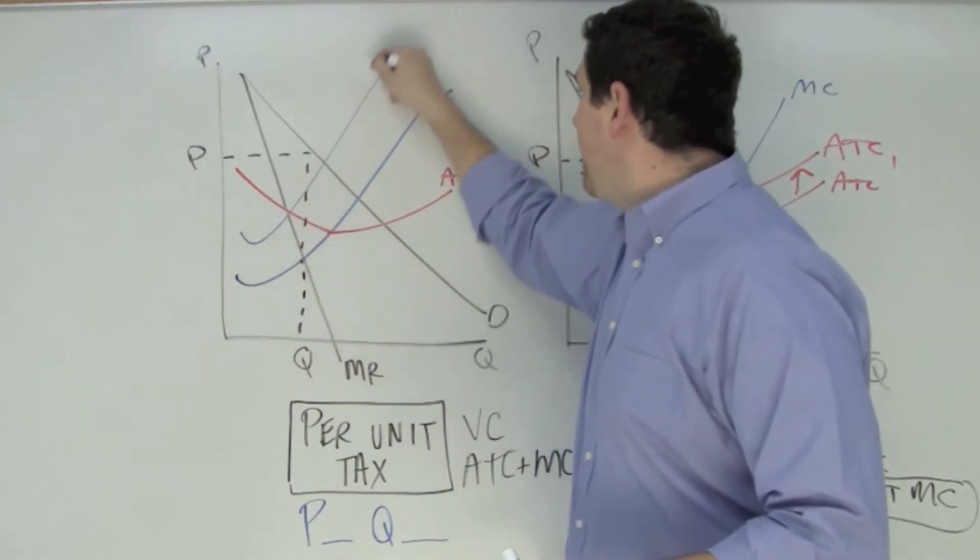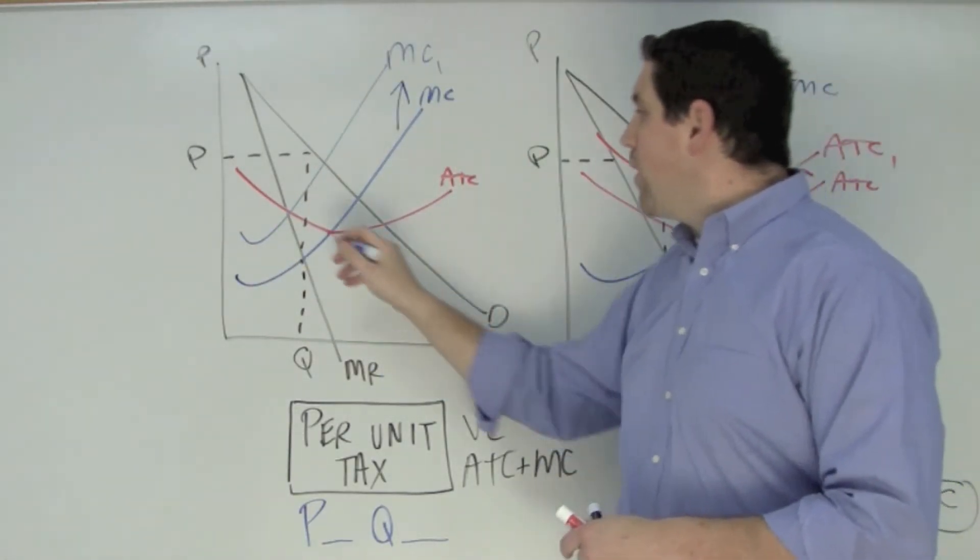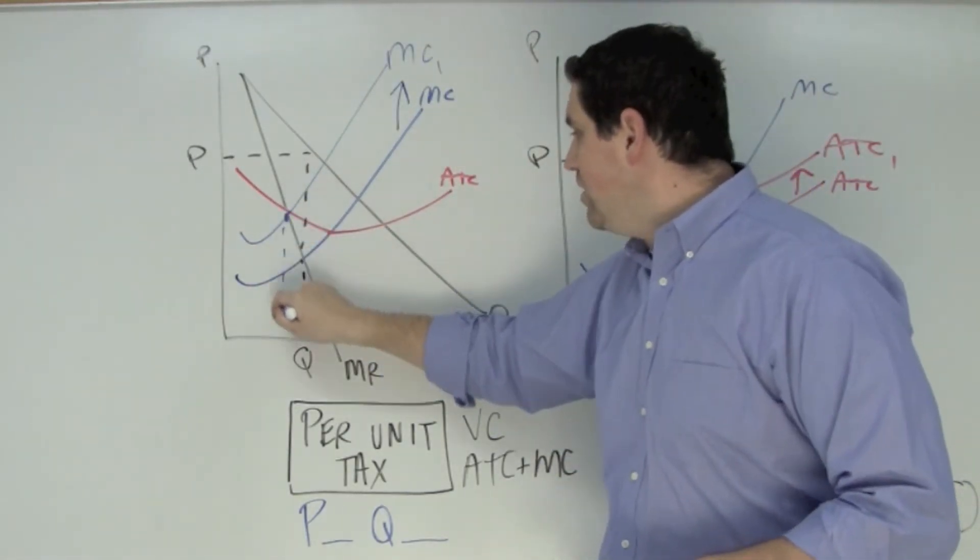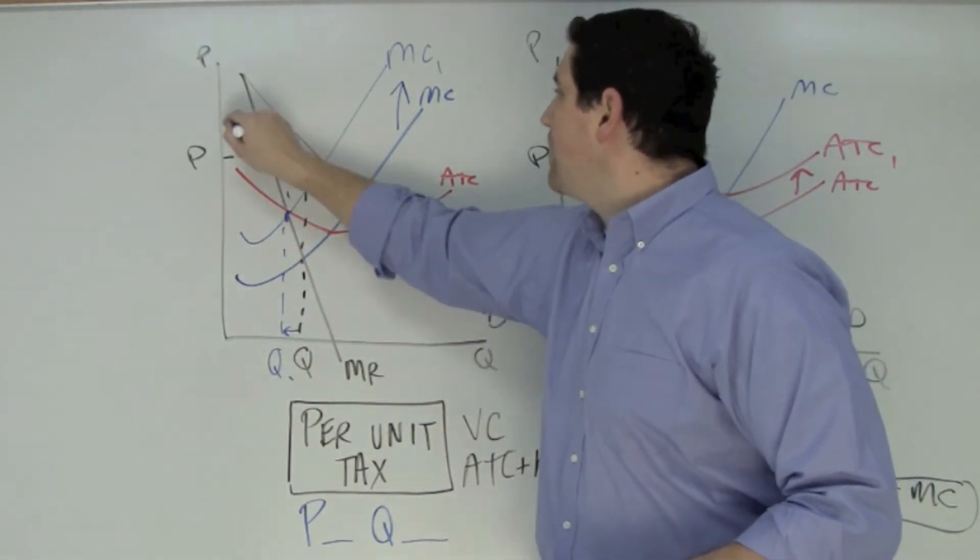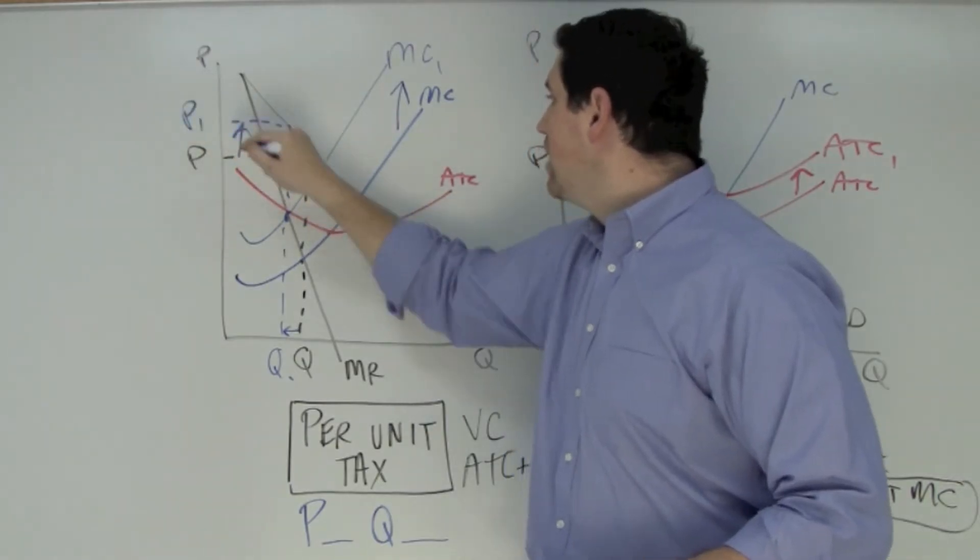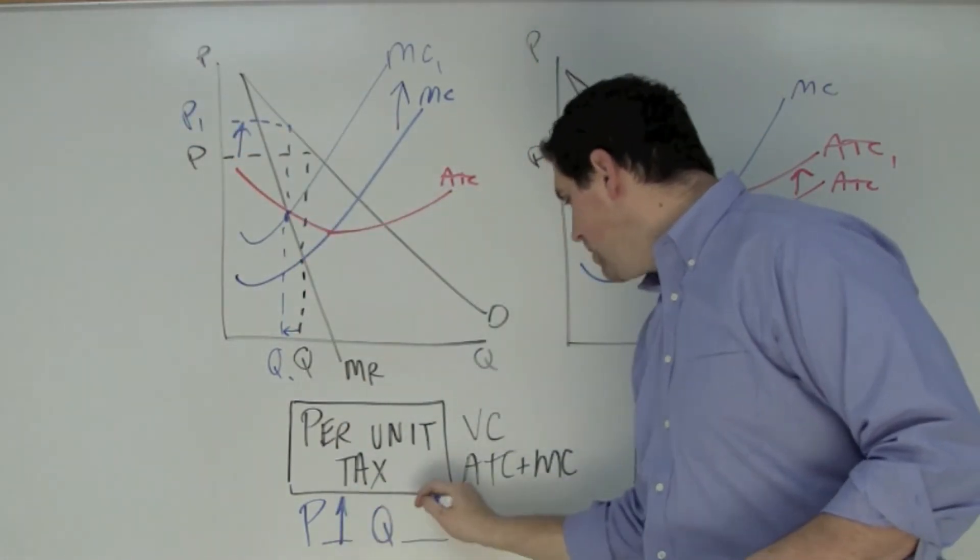Marginal cost is going to go up. Now the point where MR hits MC has changed, so the quantity is going to decrease. The price the monopoly is going to charge is going to be higher. So price goes up and quantity goes down.